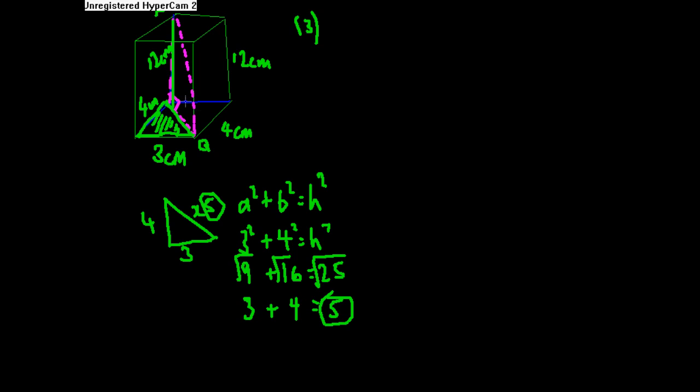That makes this length 5. So far in this question we're being asked PQ which is this line here. We know that if we take out that triangle out of the cuboid, we've got this. We knew before that this was 12 centimeters and we've now found out that this length over here, the base, is now 5 centimeters.